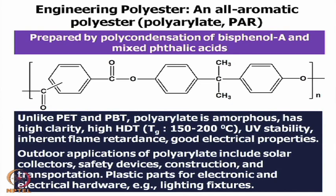This all-aromatic polyester can be prepared by polycondensation of bisphenol A and mixed phthalic acid. This is the bisphenol A moiety, and this is the diacid part — mixed phthalic acid — where the linkage of two carboxyl groups to the aromatic ring can be either at the para, ortho, or meta positions, that means 1,2-, 1,3-, or 1,4-linkage. When that mixed phthalic acid is condensed in melt condition at high temperature with bisphenol A, it leads to all-aromatic polyesters.